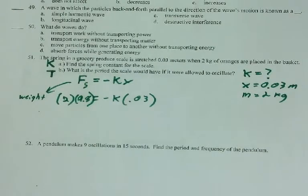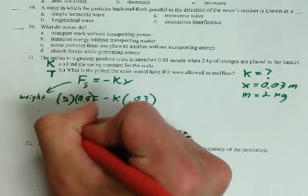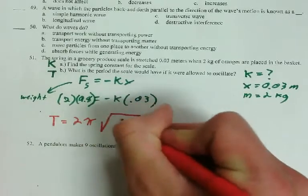Then, to solve for B, you're going to use the other equation, period is equal to 2 pi square root of m over k.